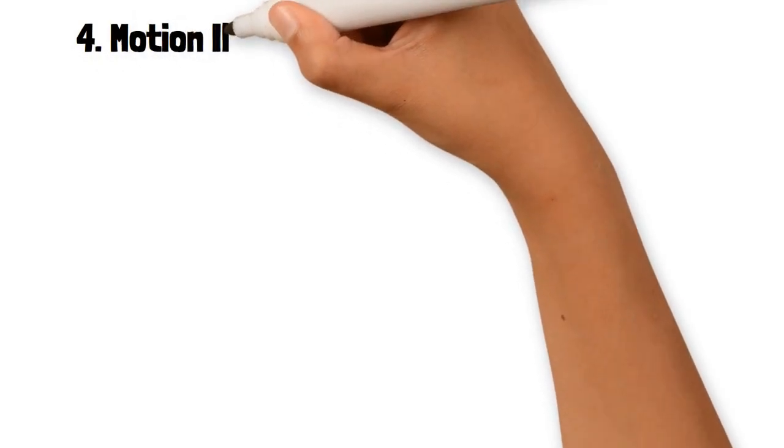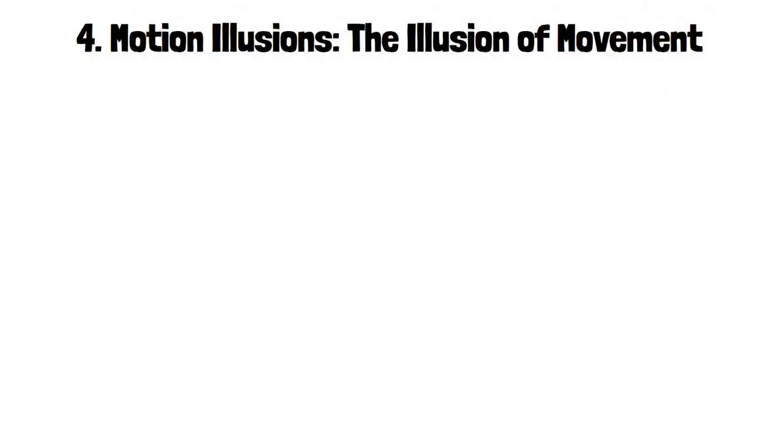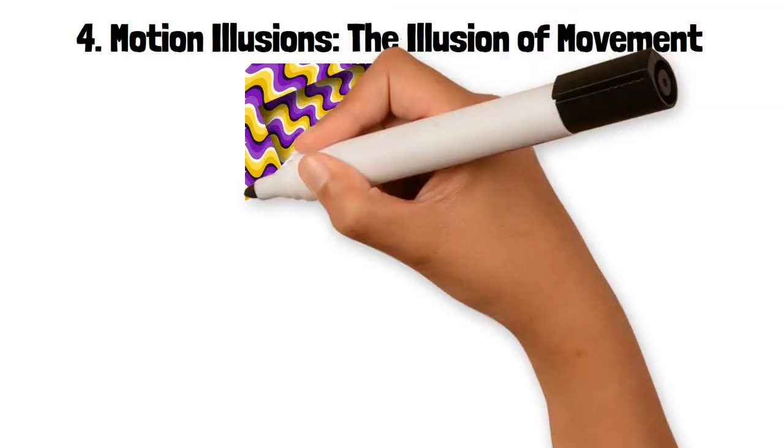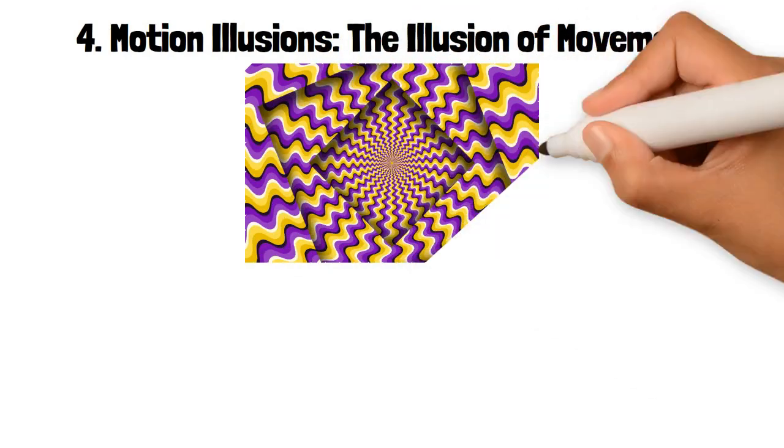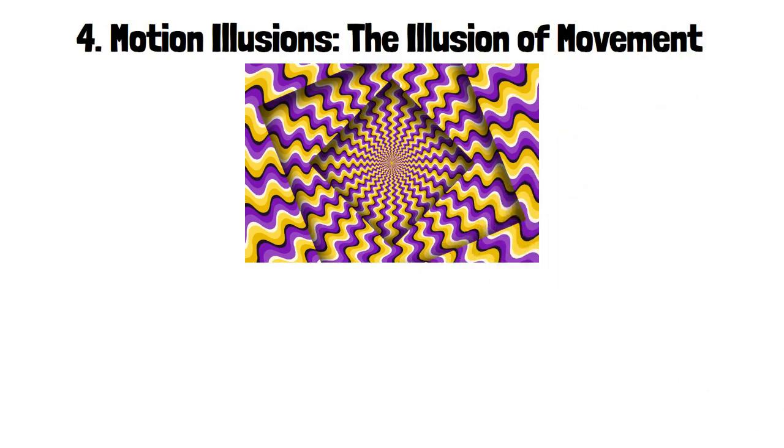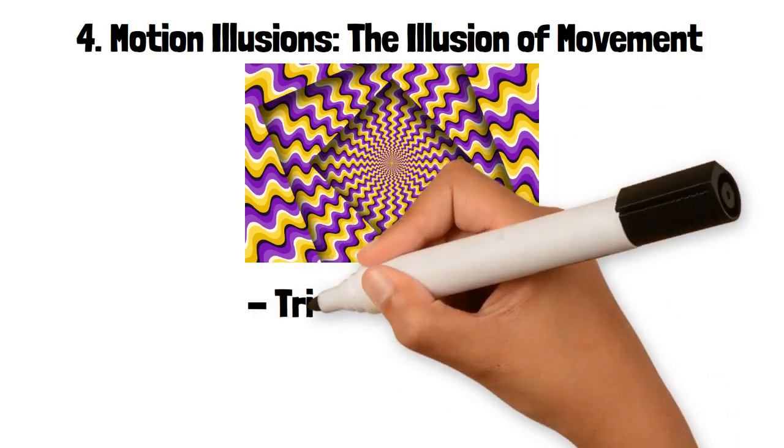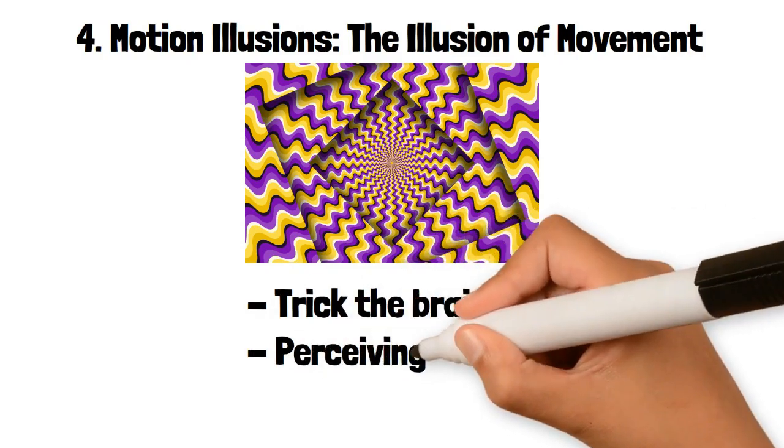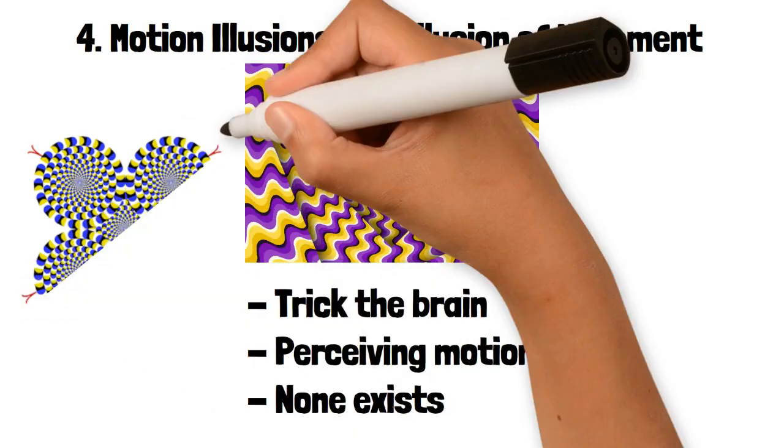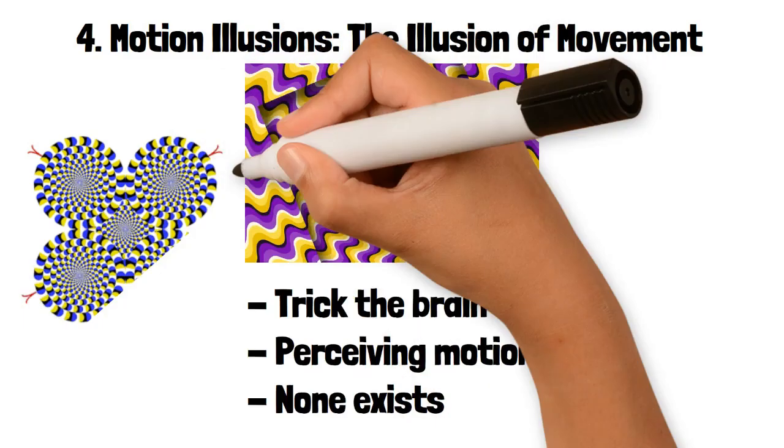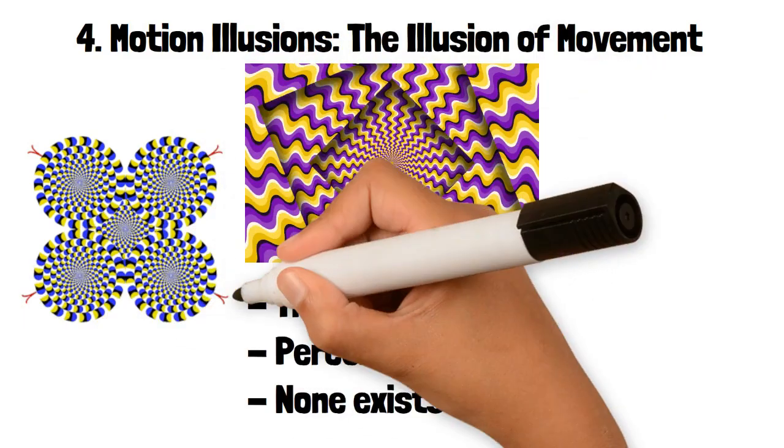4. Motion Illusions: The Illusion of Movement. Motion illusions involve static images that appear to move, often due to the interaction of color contrasts, geometric shapes, or patterns. These illusions trick the brain into perceiving motion where none exists. For example, the Rotating Snakes illusion involves concentric circles or spirals that appear to rotate when you focus on different parts of the image.